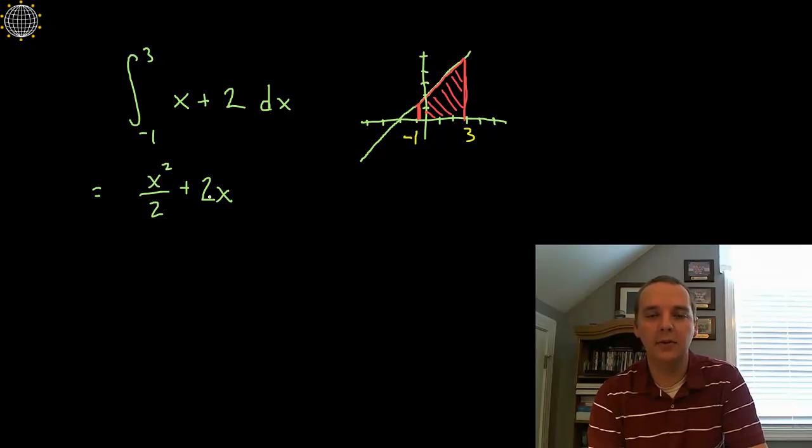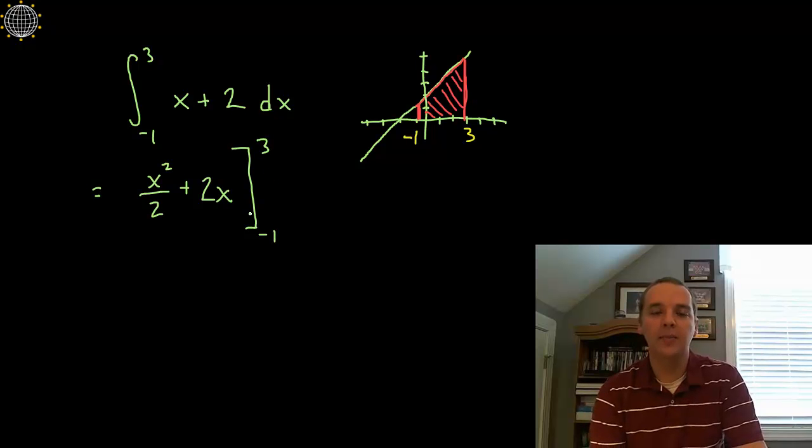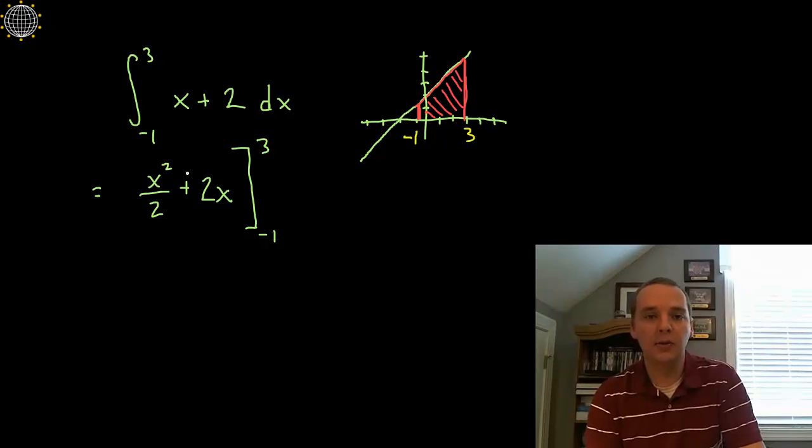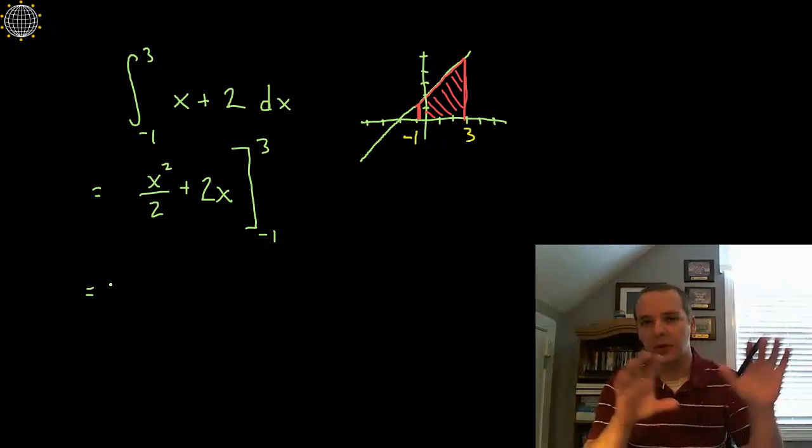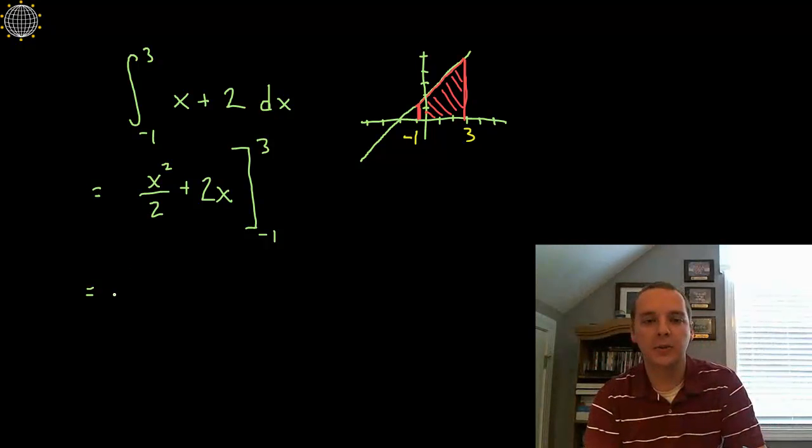So once you have the anti-derivative, the common notation is we'll put a bracket on the right-hand side with a minus 1 and a 3. And what this tells the reader is, alright, in just a second we're going to plug in 3 and we're going to plug in minus 1 and we'll subtract those two quantities. That just keeps you from writing stuff all over the place. Alright, so here we go. Let's plug in 3 and then let's plug in negative 1 and then we'll see what two numbers we'll get and we'll subtract.